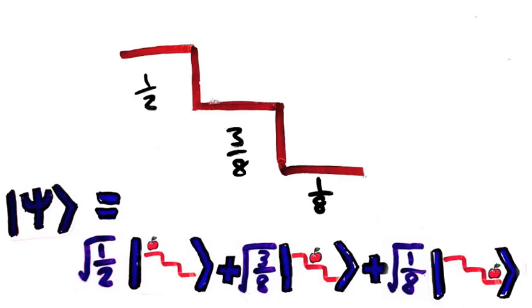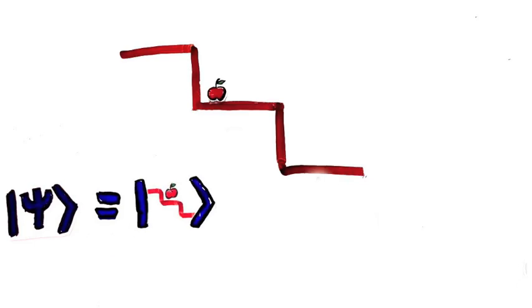And now you guys know the two parts of the measurement rule. First, the outcome is random but the probabilities come from the coefficients in the wavefunction. And second, after a measurement, the wavefunction collapses.